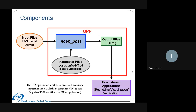UPP outputs in GRIB2 format. For any further downstream processing, you can use a number of applications — for example, WGRIB2 for re-gridding, or various applications for visualization, plotting, and verification.